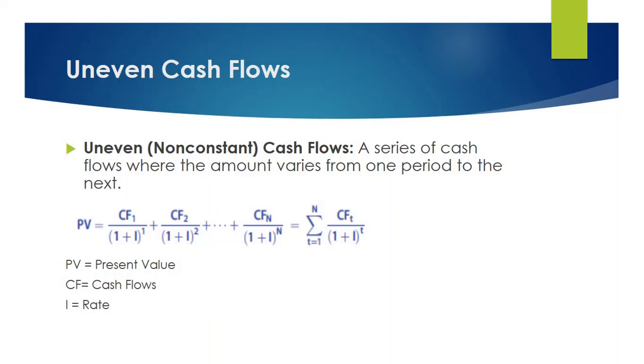Cash flows of the uneven cash flows fluctuate over the period, so cash flows of uneven cash flows are not constant like annuity or perpetuity. Now let's look at the present value formula of uneven cash flows, so it's PV